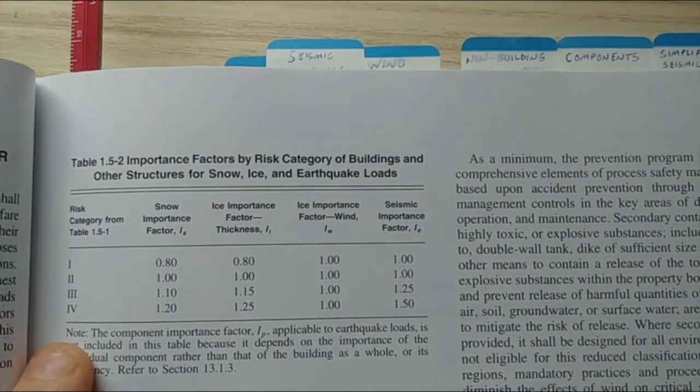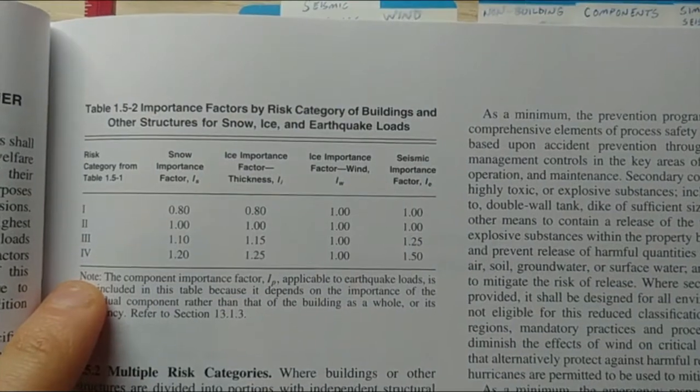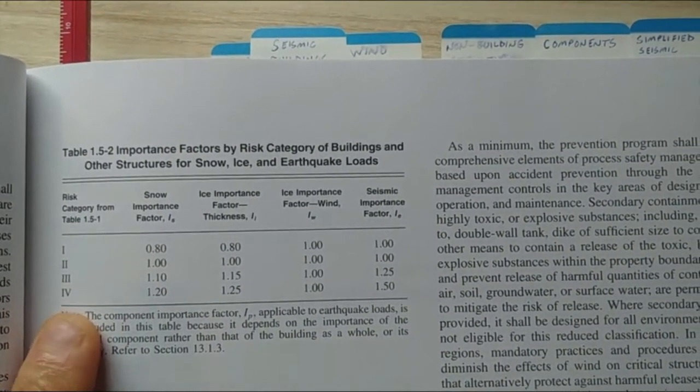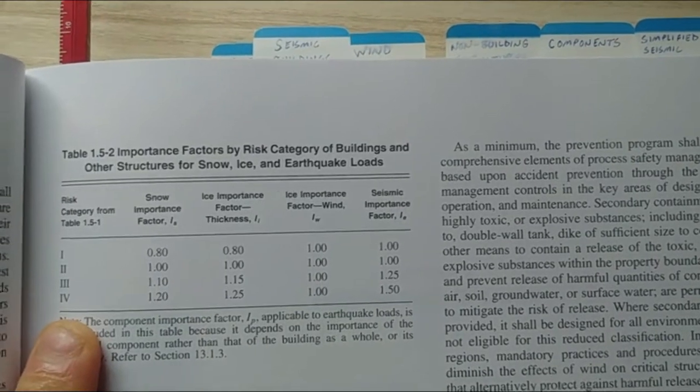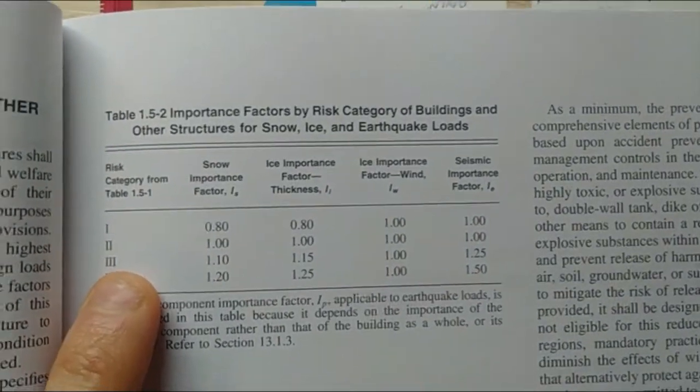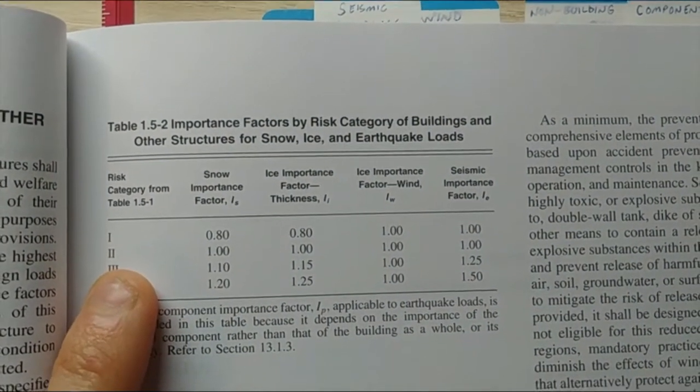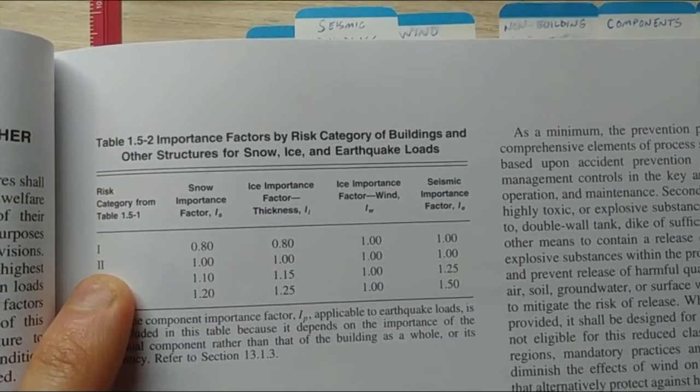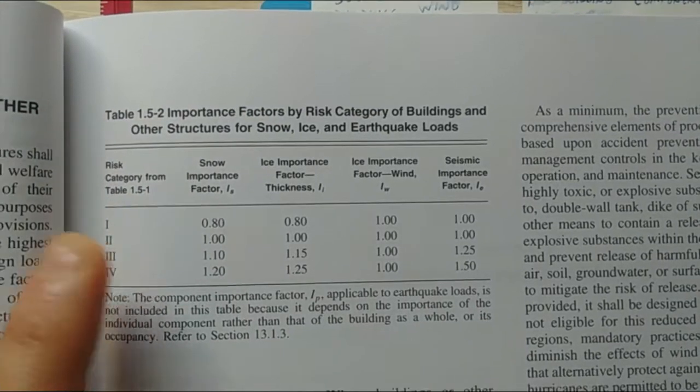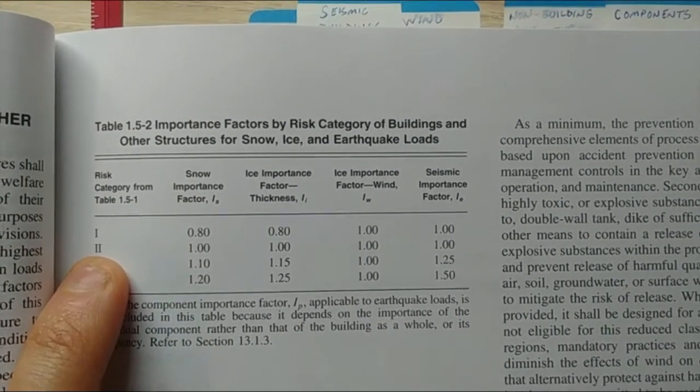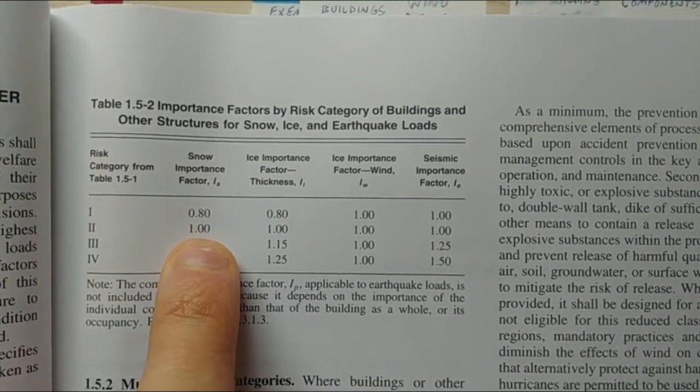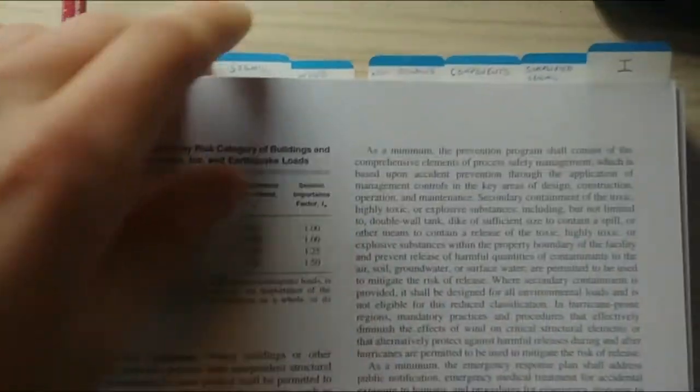For our importance factor, we're going to go to page 5 and table 1.5-2. This basically defines all of your importance factors based on your risk category. I won't be going today into risk category and how to define that. If you would like me to go further into that, please leave a comment under this video. But today, for simplicity's sake, our risk category is going to be 2, and that's most office building criteria and residential structures. Snow importance factor I sub S then equals 1.0.